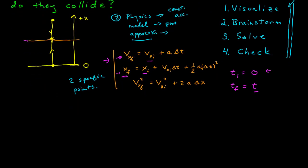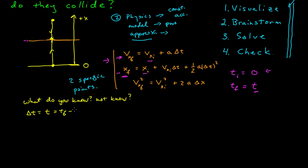We have some physics, approximations, and a model to apply to the problem. The next part of brainstorming is: what do you know and what do you not know? By establishing relationships between the known and unknown, once we have enough of them we can solve the problem. We have our time interval equal to t, which is just tf minus ti. Let's go ahead and make lists for each particle. I'm going to call the lower ball particle 1 and the upper ball particle 2. For the first particle, let's determine its initial position, x sub 1i.